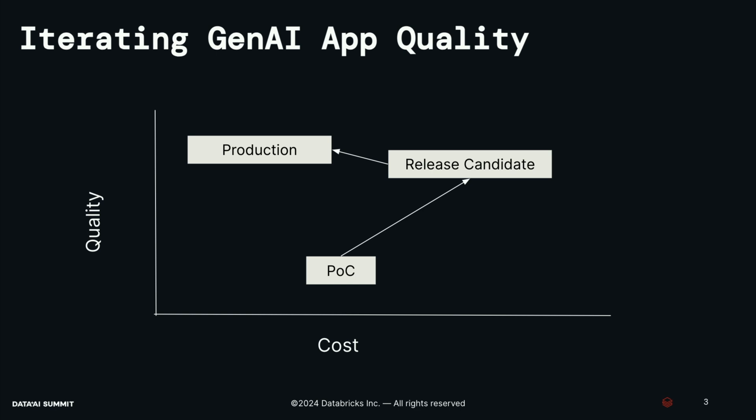They oftentimes find that the quality isn't quite there to go to production. So they do this process of pulling on the levers available to them — using larger models, better models, better algorithms — to actually boost the overall quality of that system. At some point they're successful and get to something like a release candidate, but they've deployed these large models and techniques in a way that makes it quite expensive to put in production.